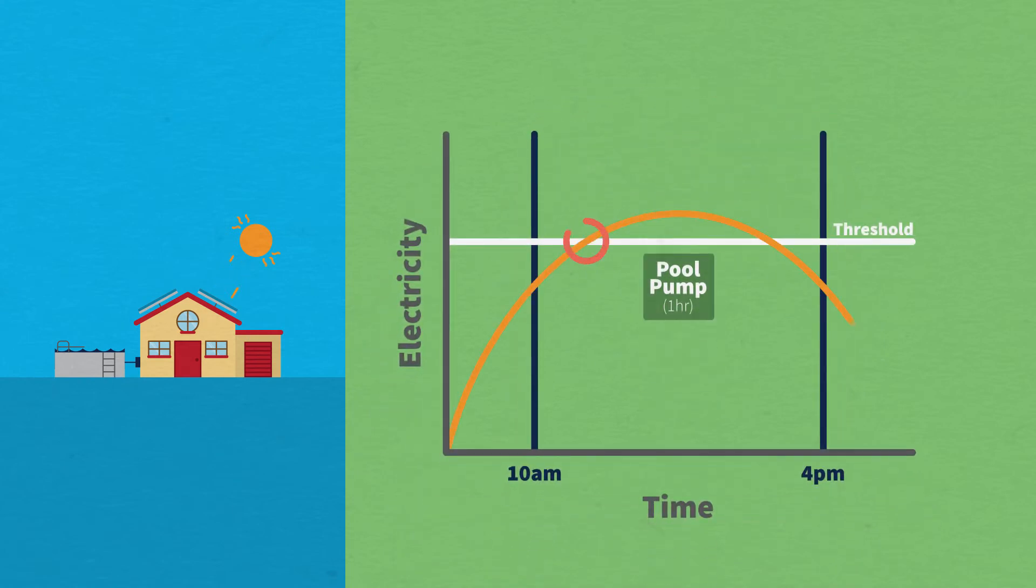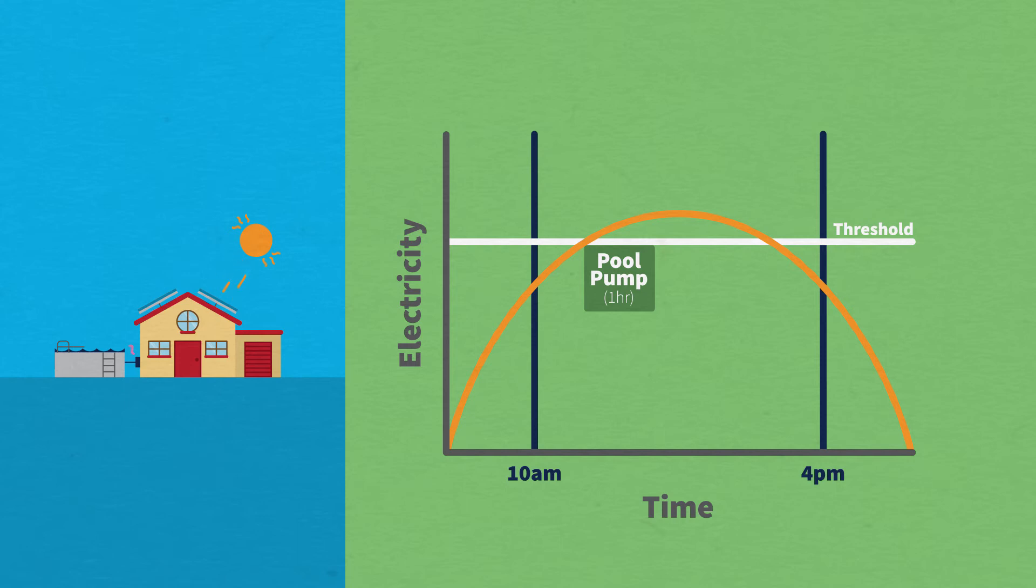Once your solar generation hits the threshold, the green circuit switches on, and your pool pump will run for an hour, just as you planned.